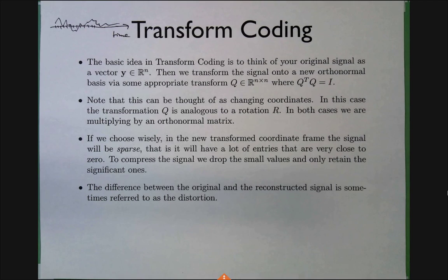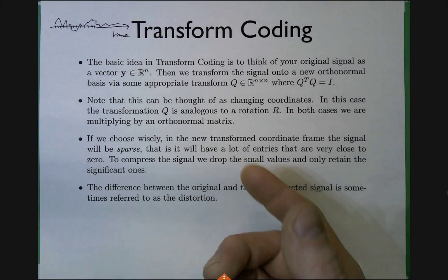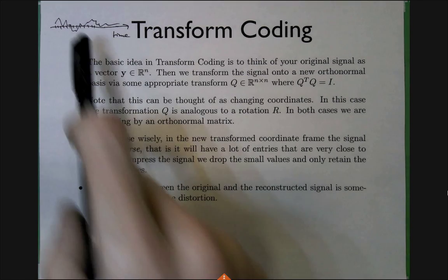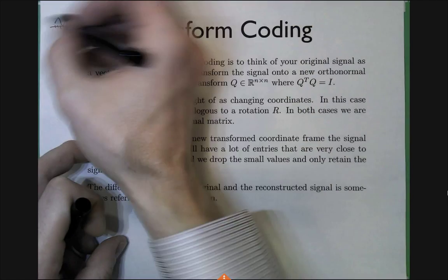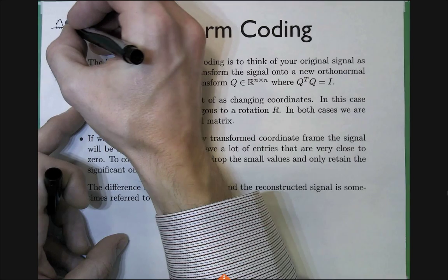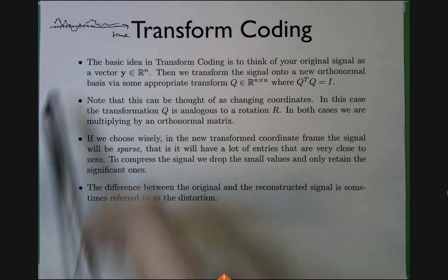A more obvious example is animation: a movie isn't continuous smooth motion but discrete frames. If you flip them quickly enough you don't tell the difference. Audio sampling is exactly the same idea — instead of a continuous function you have samples at discrete time intervals. That's what your wave file is: a sequence of samples recorded on a computer.